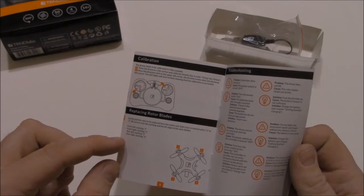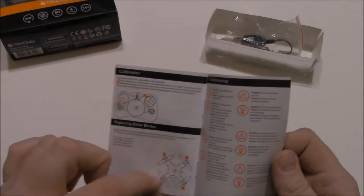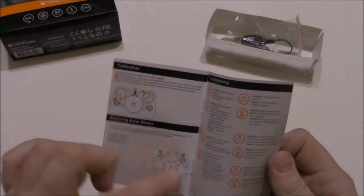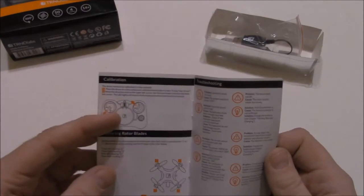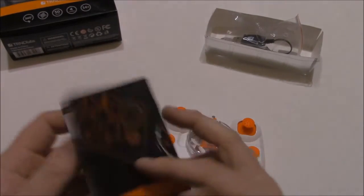Also it tells you how to replace the blades, the rotors. There are specific numbers that you have to match up to one and two because of the way the blades are made. And there is just some troubleshooting and safety precaution and caring for your drone.